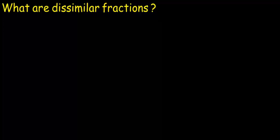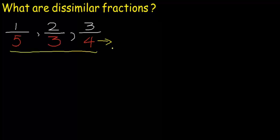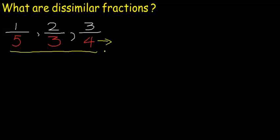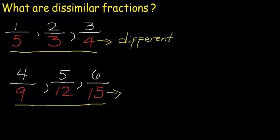What are dissimilar fractions? Dissimilar fractions are fractions with different denominators. These are dissimilar fractions because they have different denominators. These are also dissimilar fractions because they have different denominators.